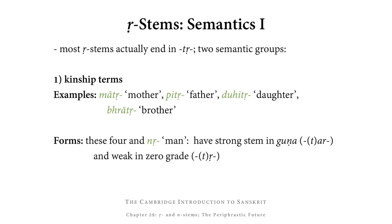Before we go on to looking at a full R-stem paradigm, let's briefly take a look at the semantics — the meaning of R-stems. Most R-stems actually end not just in R but in TR and fall into two semantic groups. The first, by far the smaller, is kinship terms — words expressing family relationships, such as mātṛ meaning mother, pitṛ father, duhitṛ daughter, and bhrātṛ brother.